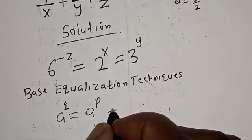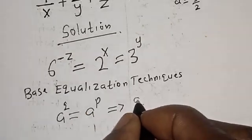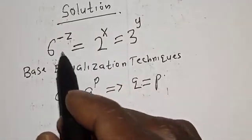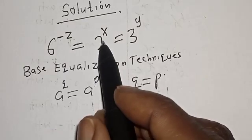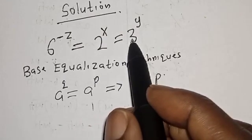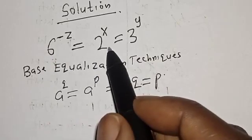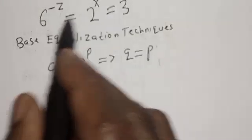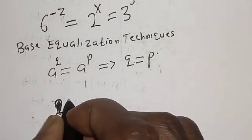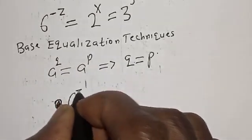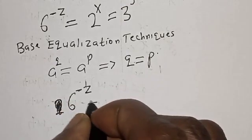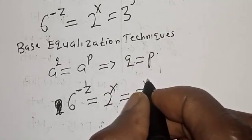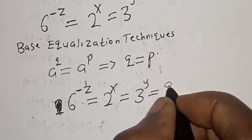Note that 2 raised to power 2 is less than 3, and 6 is greater than 2 and 3. Now let's start: let the whole of this equation equal to Q. That is, 6 raised to power minus z is equal to 2 raised to power s is equal to 3 raised to power y, which is equal to Q.